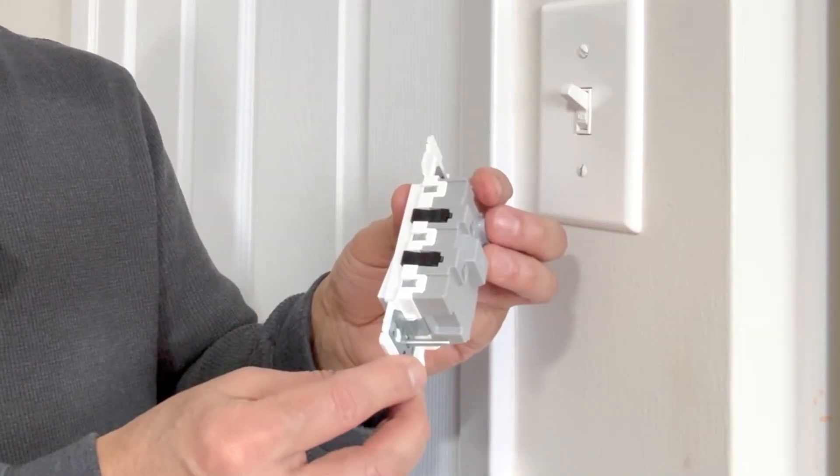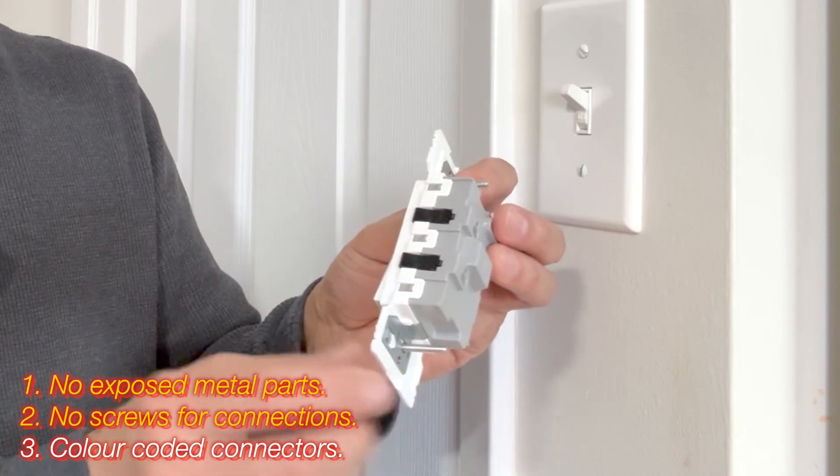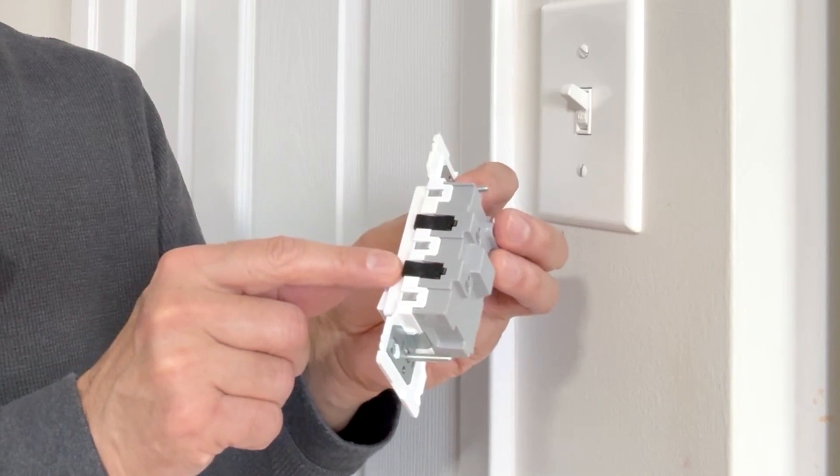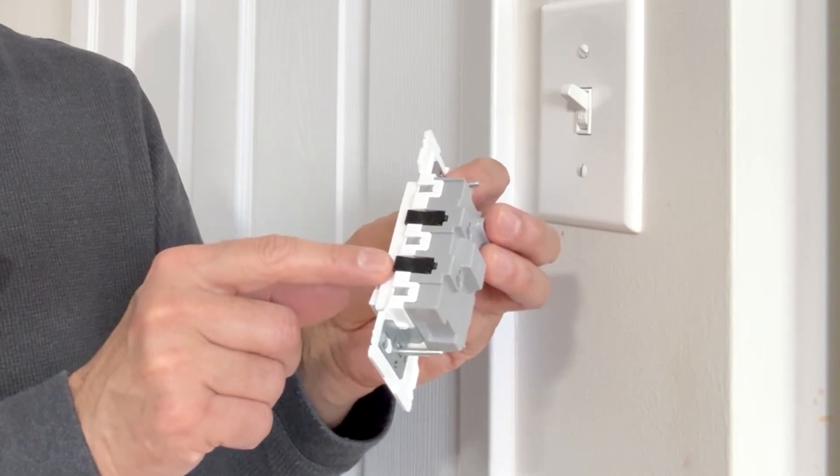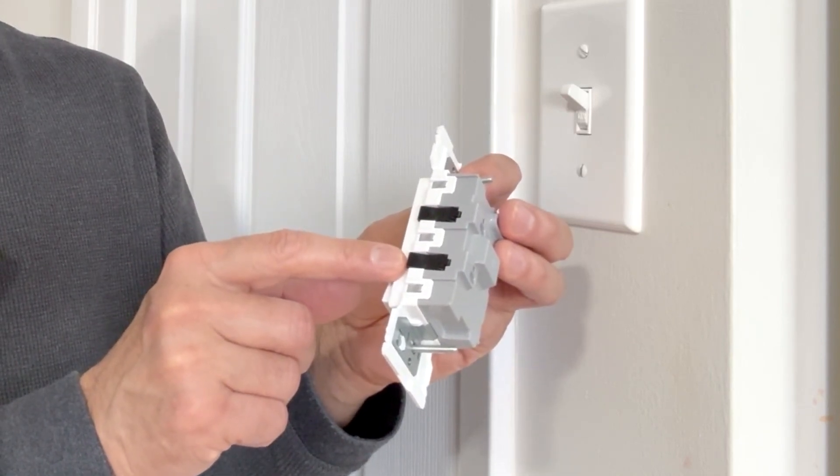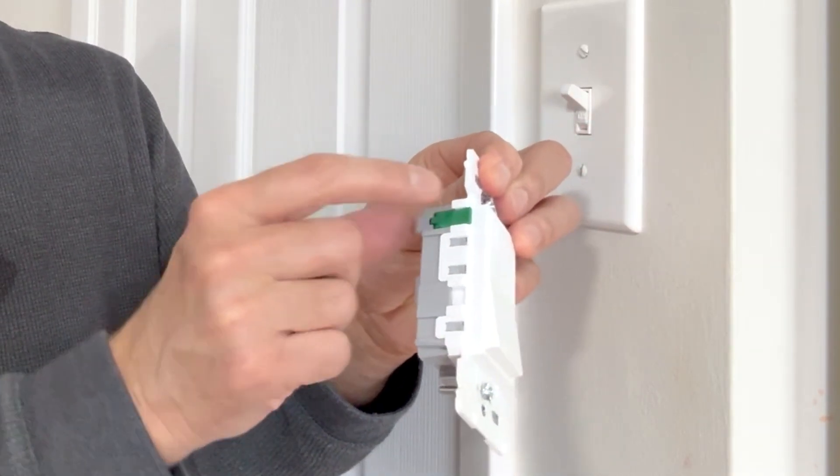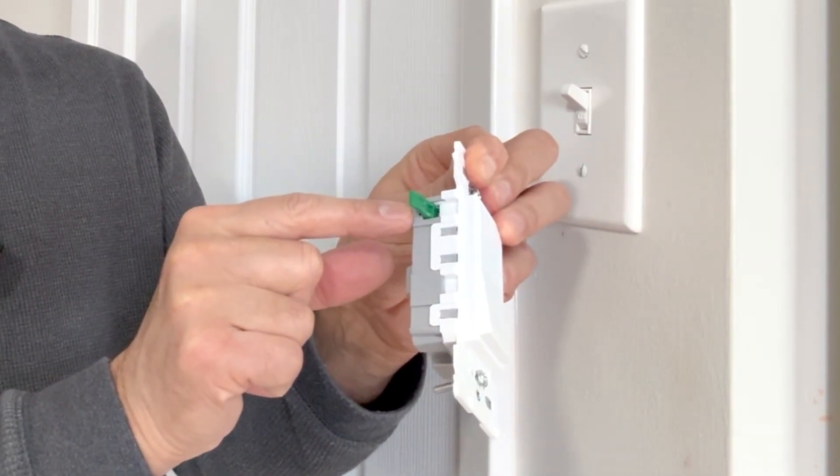The next nice feature about these switches is that the tabs are color coded. Connectors are color coded. You see black here. That means this is a single pole switch and only black wires are connected here. On the other side, you will see a green connector here for connecting the ground wire.